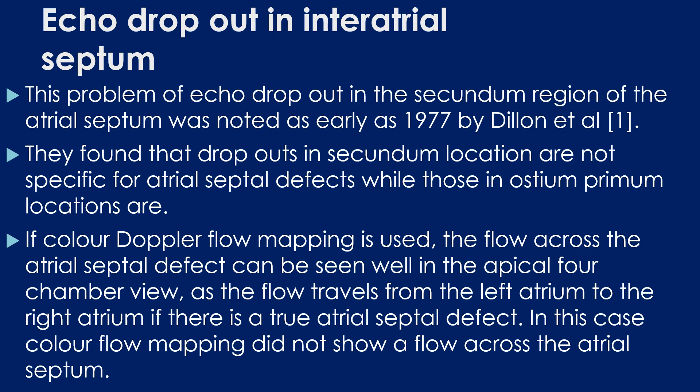This problem of echo dropouts in the secundum region of the atrial septum was noted as early as 1977 by Dillon and associates. They found that dropouts in the secundum location are not specific for atrial septal defects, while those in the ostium primum location are.